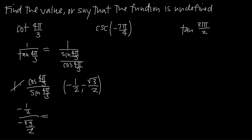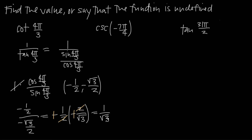Because we're dividing by a fraction, we multiply by the reciprocal: −1/2 multiplied by 2/√3. The two negative signs cancel to become positive, and the 2s cancel from numerator and denominator, leaving 1/√3. We want to rationalize the denominator by multiplying by √3/√3, which doesn't change the value. The result is √3 in the numerator and √3 × √3 = 3 in the denominator, so the final answer is √3/3.